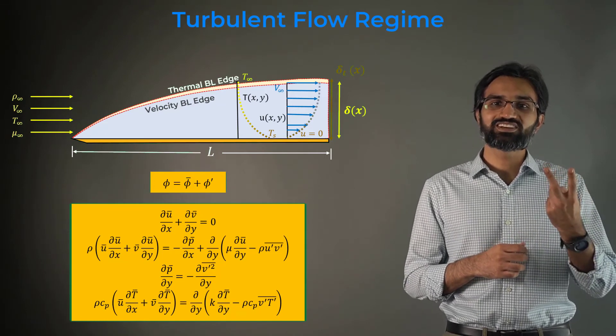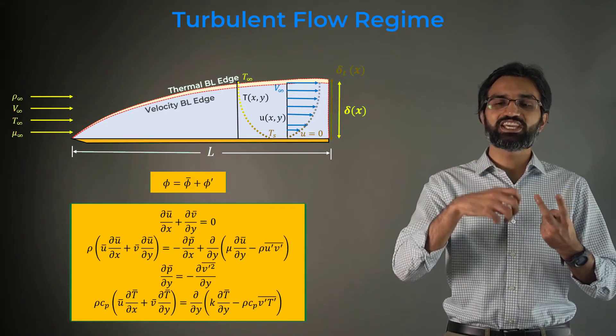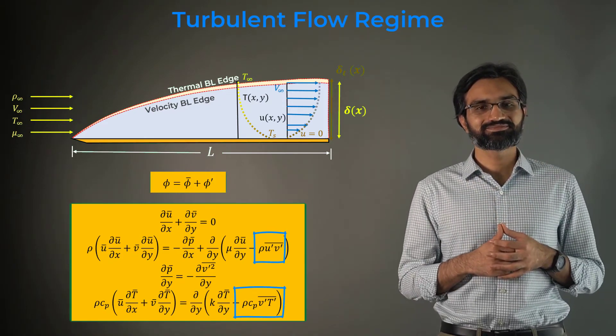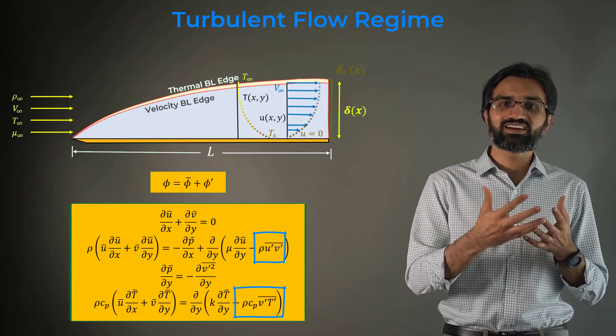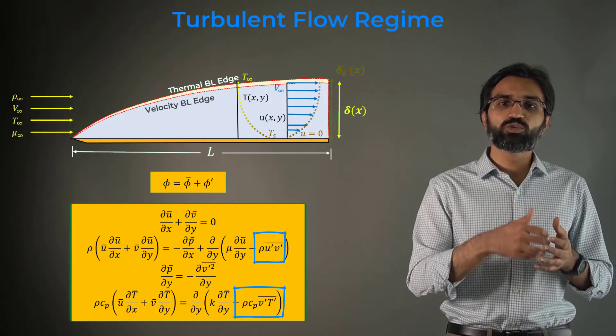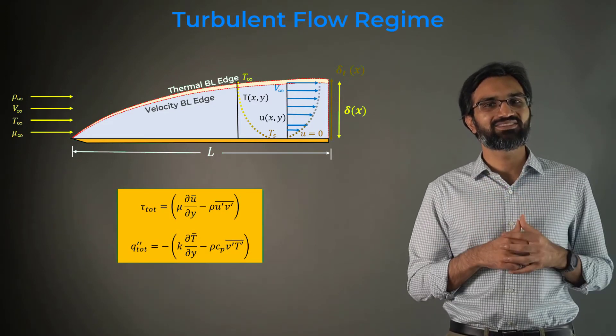There are two extra terms in the momentum and energy equations respectively, and these are highlighted here. Both these terms are a result of turbulent mixing and they individually contribute towards the total shear stress as well as the total heat flux.